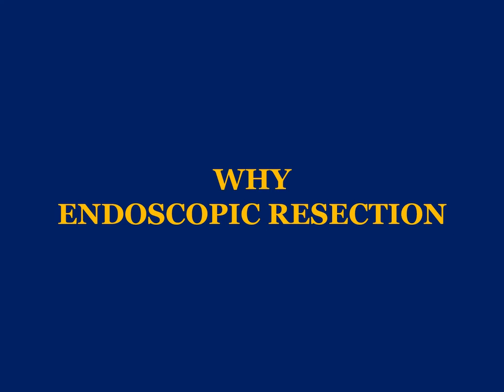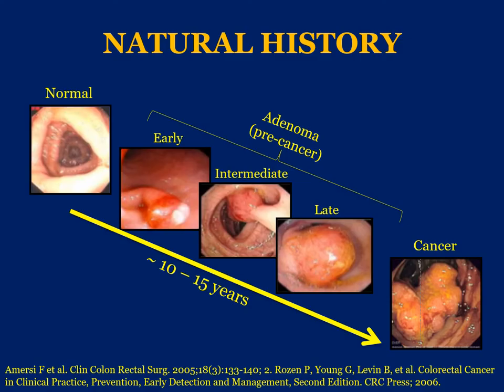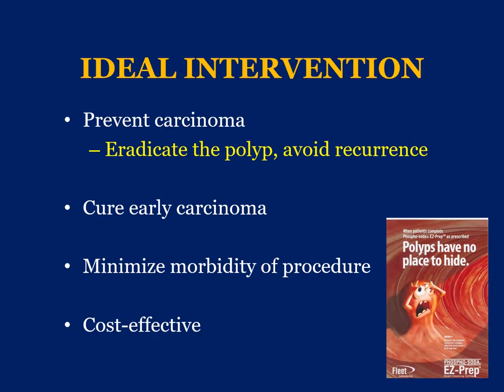Having provided a comprehensive background on cancer and polyp globally and in the UAE, I'd like to make the case for endoscopic resection. The adenoma-to-carcinoma sequence spans 8 to 15 years, giving us a great opportunity along this continuum to catch patients early when they are either curable surgically or potentially managed endoscopically. The ideal intervention should eradicate the polyp, avoid recurrence, prevent cancer development, cure early cancer, and minimize morbidity while being cost-effective.